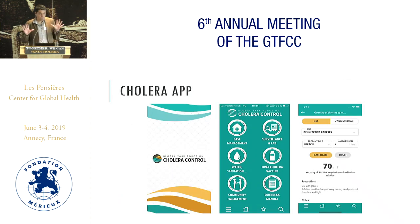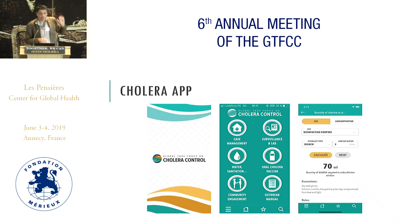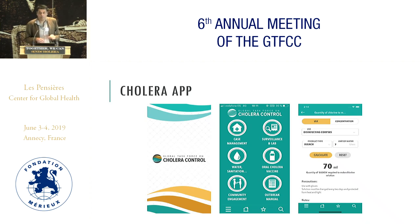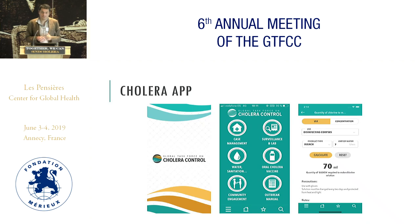I don't want to go into detail because we are going to have a demo, but this is the layout of the app. We have six sections or six modules: case management, surveillance and lab, water and sanitation and hygiene, OCV, community engagement, and the outbreak field manual. In each of these sections we have a set of tools and resources.